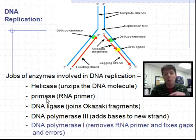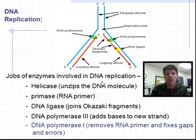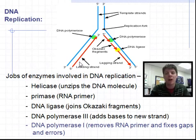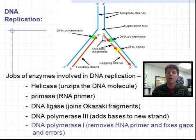We have another enzyme called primase, which adds an RNA primer to begin the sequence of replicating a new strand of DNA. There's a third enzyme called DNA ligase, which joins Okazaki fragments. DNA replication occurs in only one direction — the five prime to three prime direction. On the leading strand, replication is continuous. On the lagging strand, replication still moves five prime to three prime, producing small Okazaki fragments that need to get stitched together — and that's the job of DNA ligase.